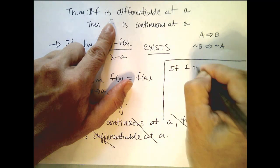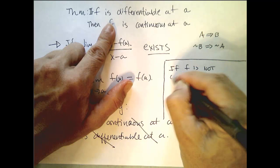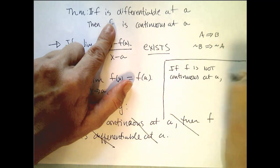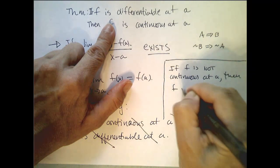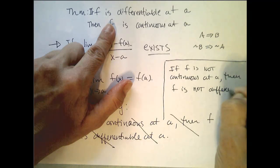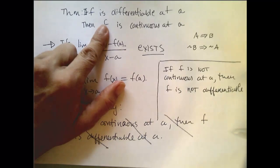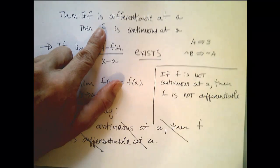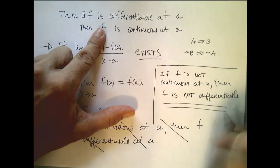That is, if f is not continuous at a, then f is not differentiable. For if it were differentiable at a, then it would be continuous at a. So if it's not continuous at a, then it couldn't have been differentiable at a to start with. That's what that says at a.